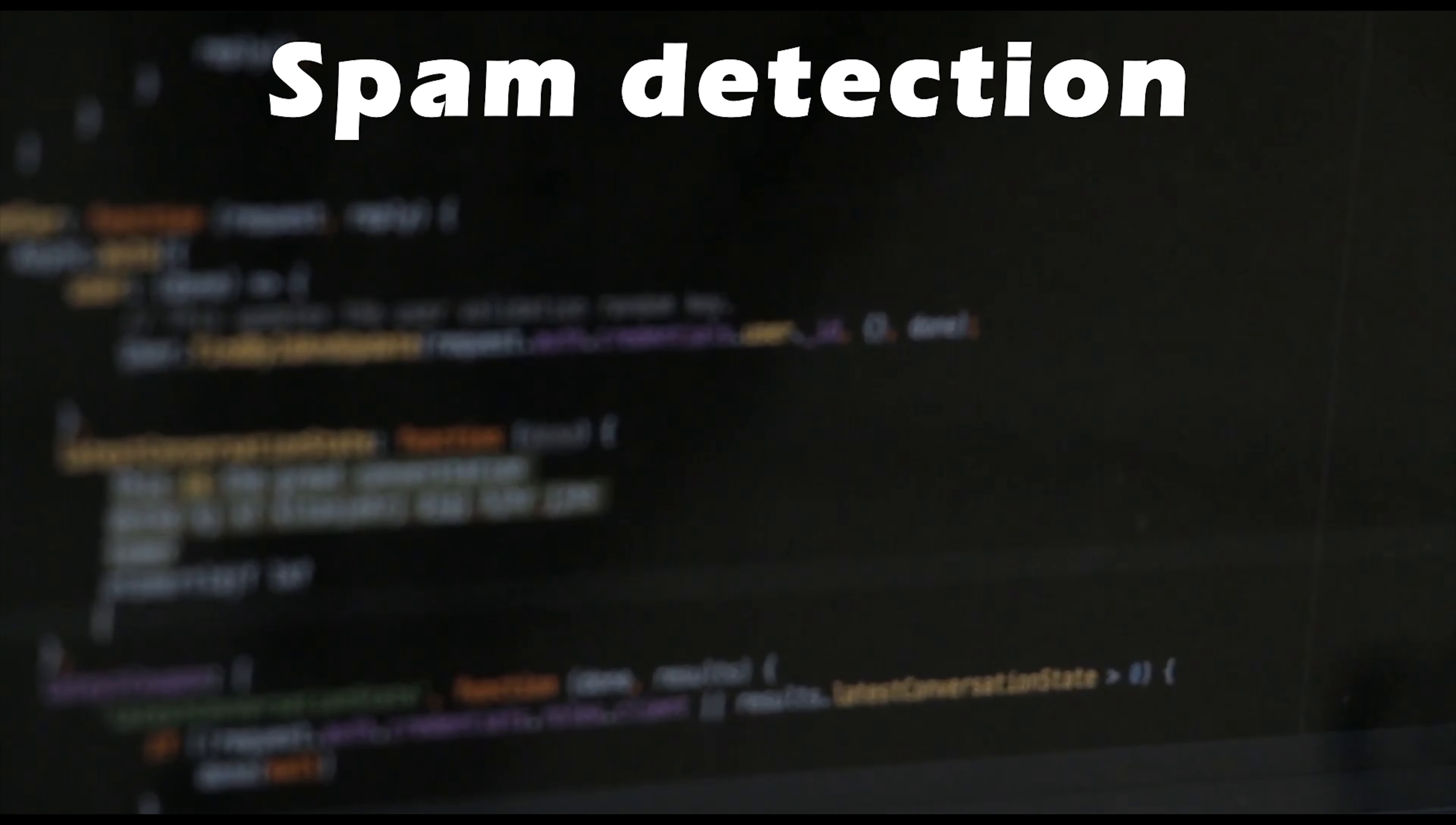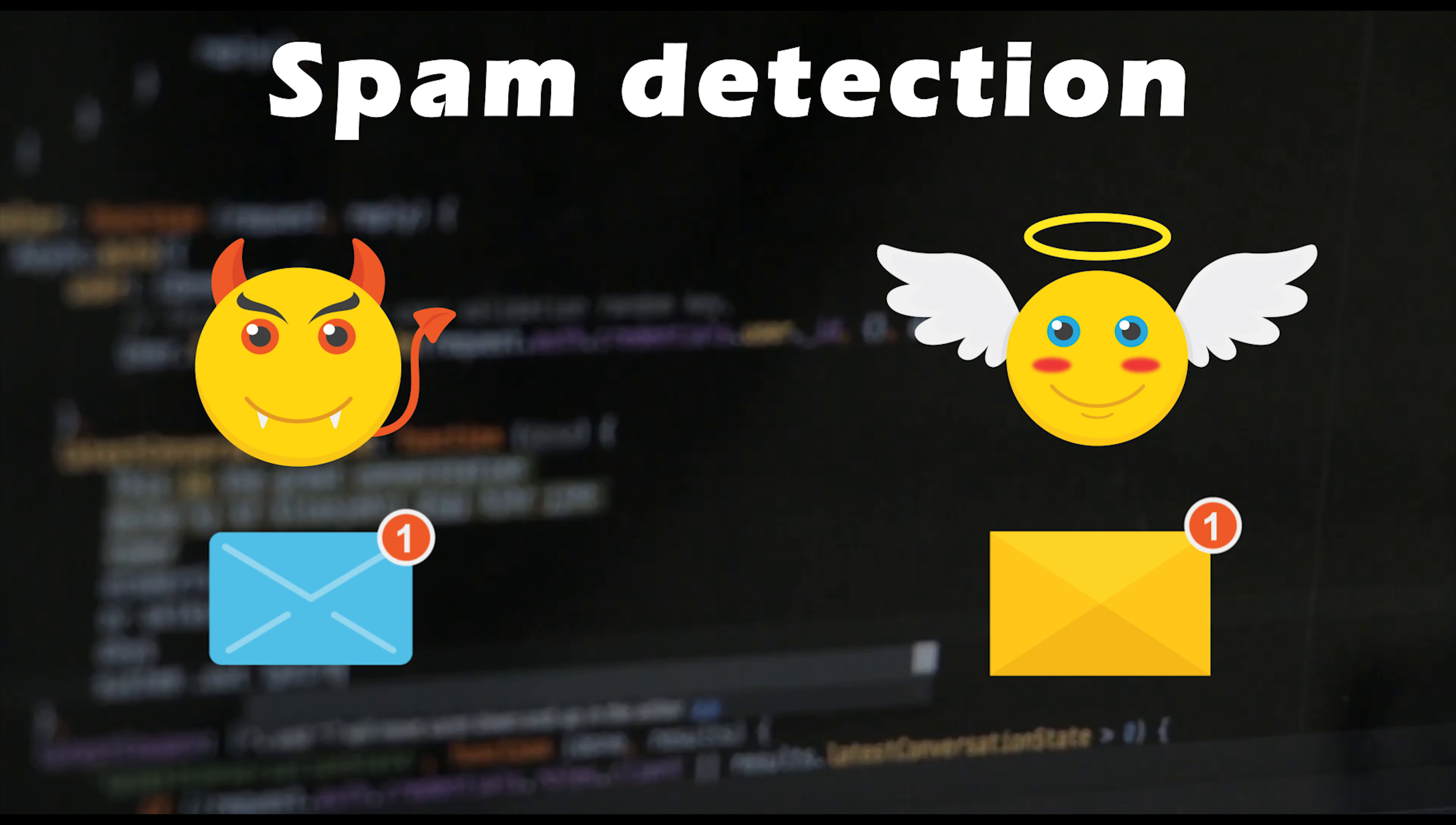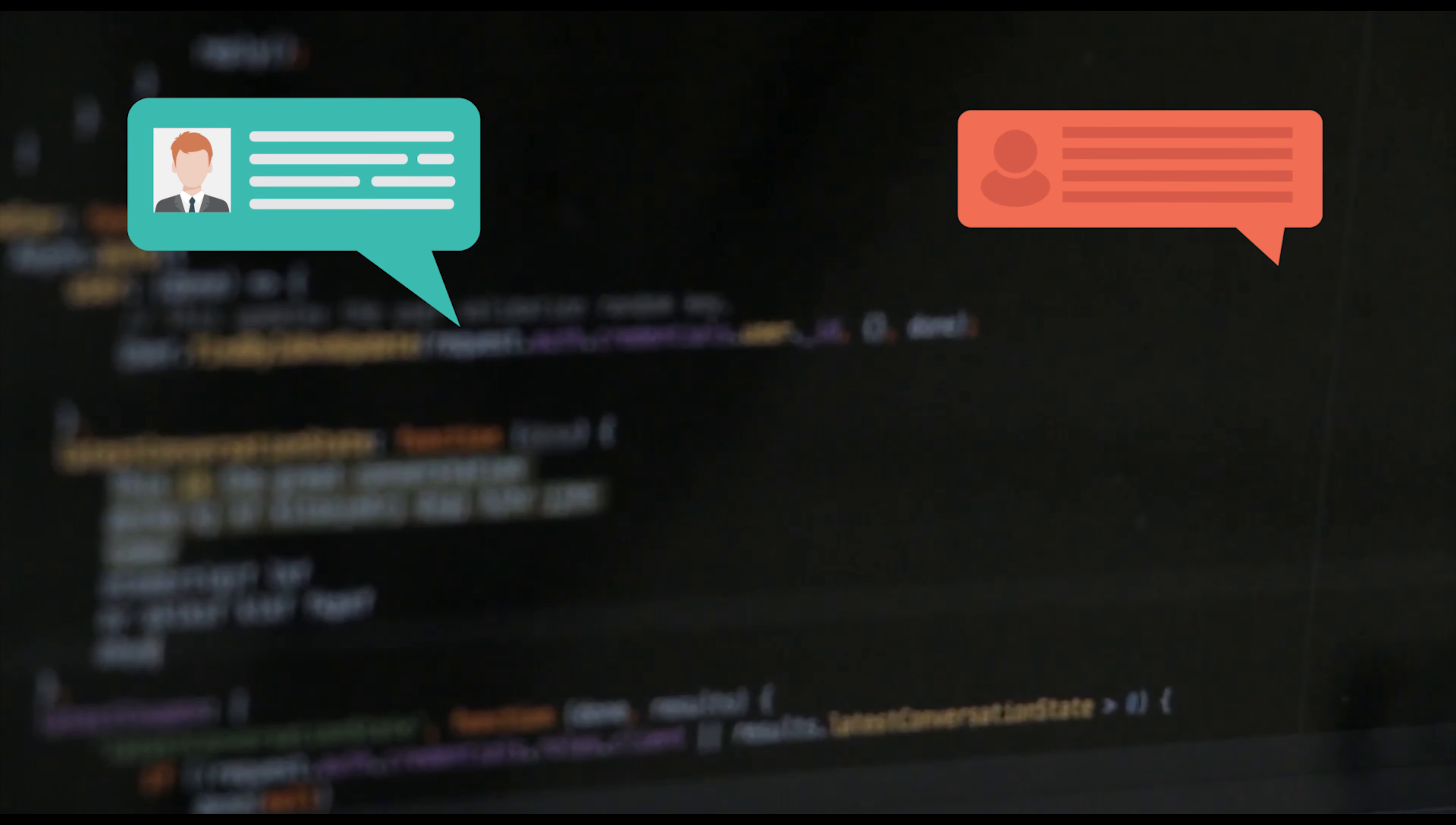For example, spam detection in email service providers can be identified as a classification problem. This is a binary classification since there are only two classes: spam and no spam. A classifier utilizes some training data to understand how given variables relate to the class. In this case, spam and non-spam emails have to be used as the training data. When the classifier is trained accurately, it can be used to detect an unknown email.